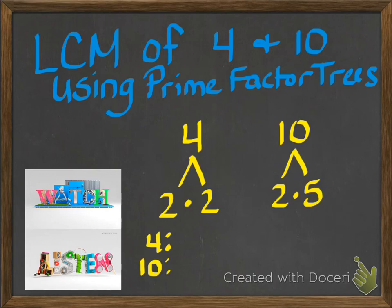Under 4, I'm going to write 2 times 2 because I got that 2 times 2 from this part right over here. Next to the 10, I'm going to list the factors that I found by using prime factor trees, which was 2 times 5.